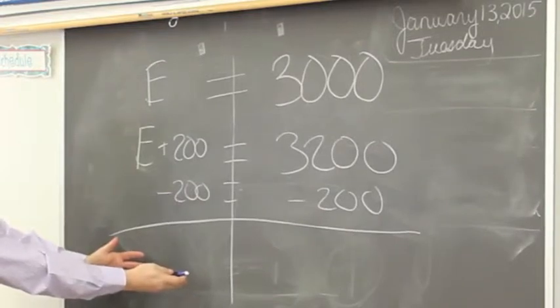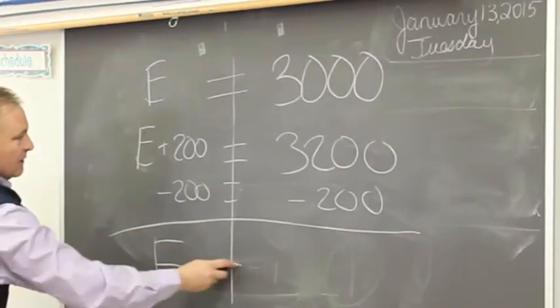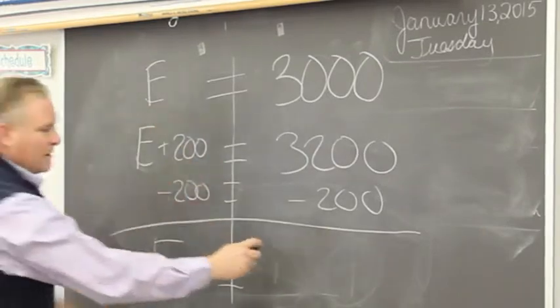Okay. What's left over here? E, everybody. Three thousand. Just the elephant. Equals? Three thousand. Yeah.